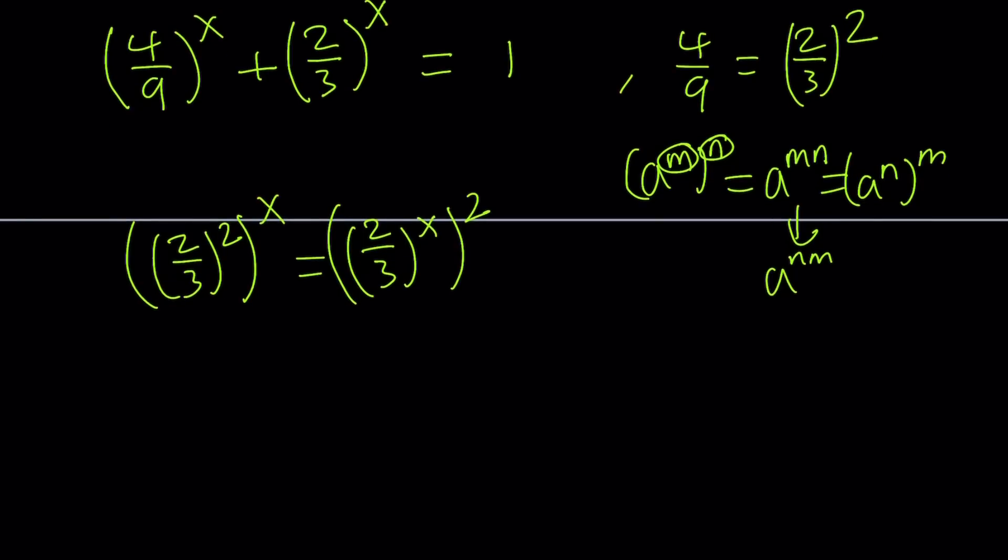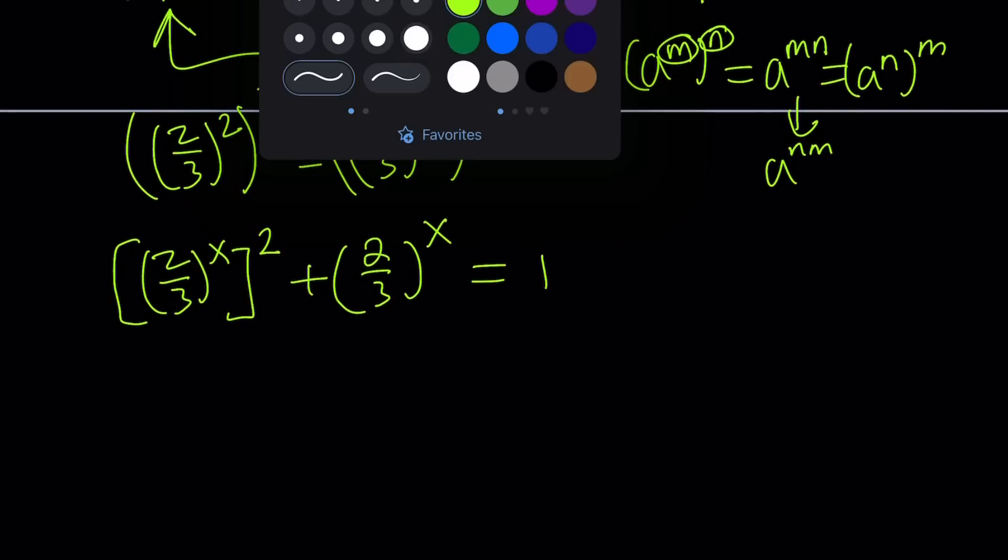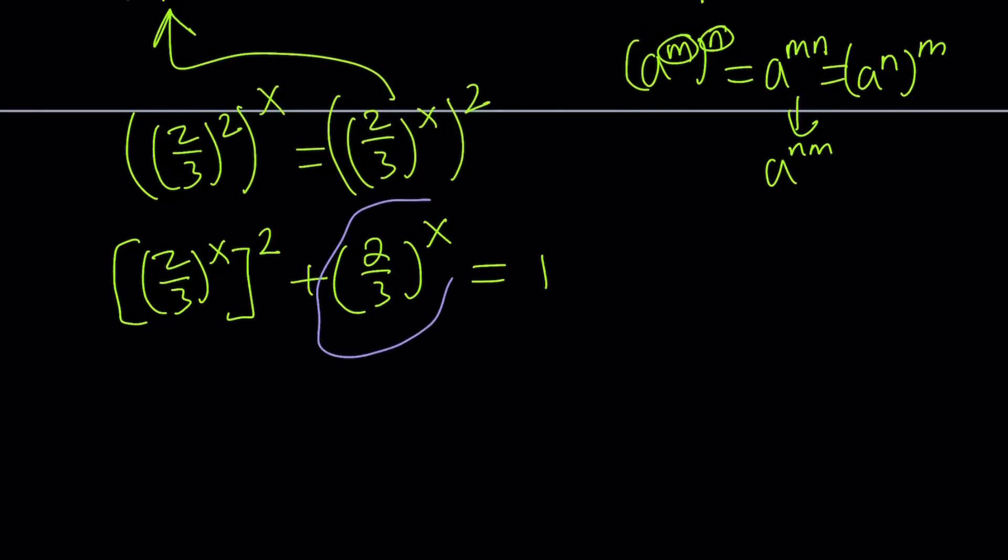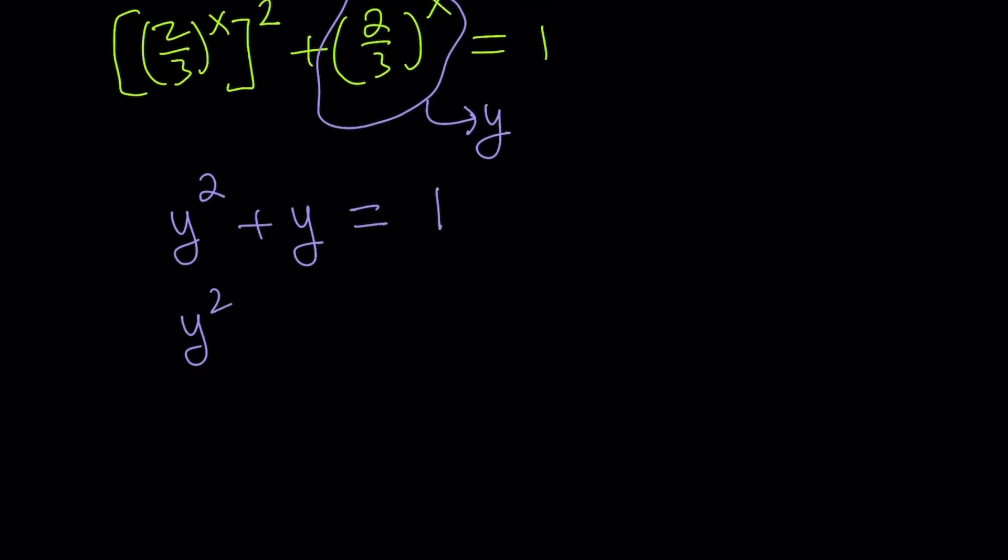If you substitute that here, we get 2 over 3 to the power x squared plus 2 thirds to the power x equals 1. 2 thirds to the power x needs to equal something, that's where we use substitution. Let's set this equal to y. Then our first term is y squared, so we get y squared plus y equals 1. This is a quadratic equation, so I want to put everything on the same side: y squared plus y minus 1 equals 0.